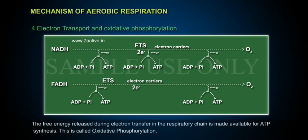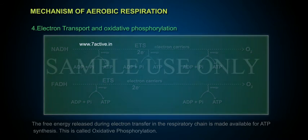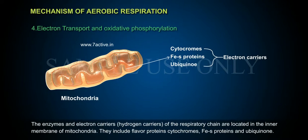The free energy released during electron transfer in the respiratory chain is made available for ATP synthesis. This is called oxidative phosphorylation. The enzymes and electron carriers of the respiratory chain are located in the inner membrane of mitochondria.